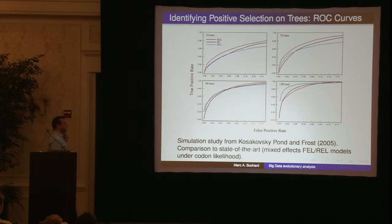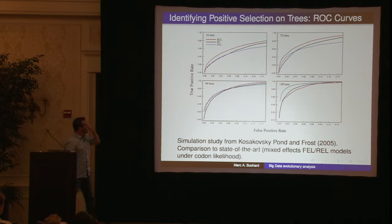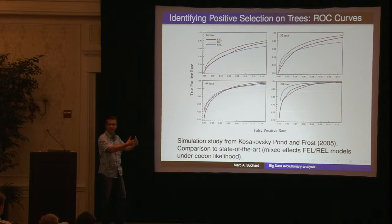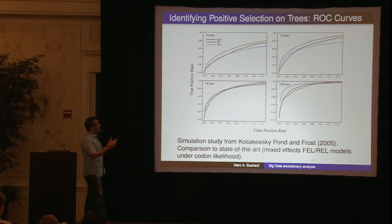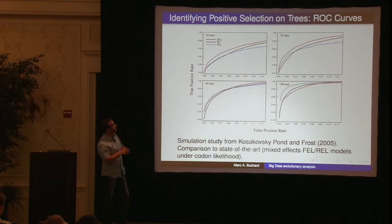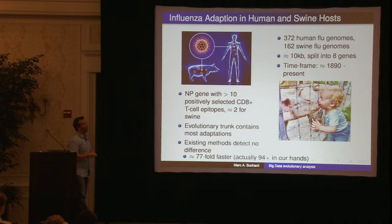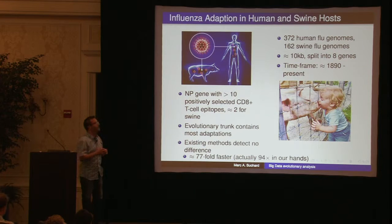These are ROC curves looking at the ability to identify sites that happen to be positively selected. Virtually there's no difference between just taking a robust estimator — made robust by taking a second expectation with respect to the observed data — versus handcrafted models that are extraordinarily slow to fit. We can return briefly and ask what's particularly interesting about differences in synonymous and non-synonymous changes — the warfare going on between influenza in humans and pigs.